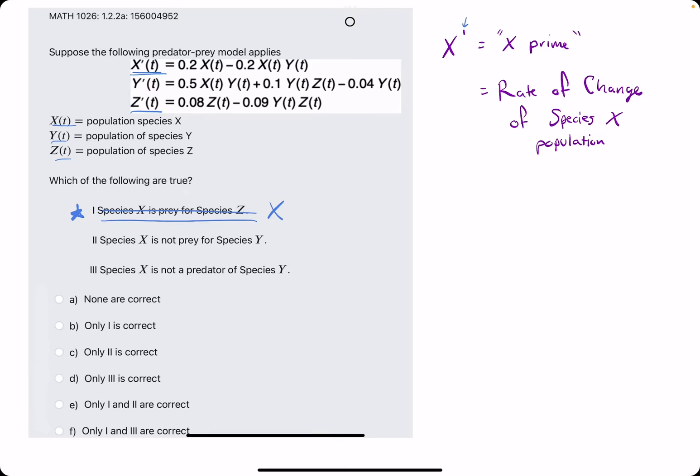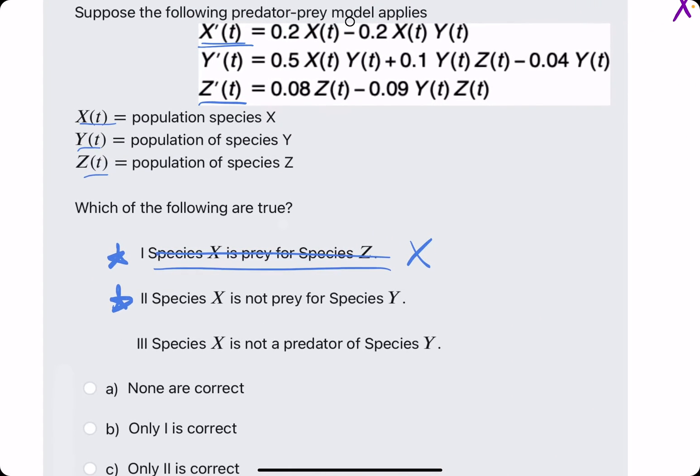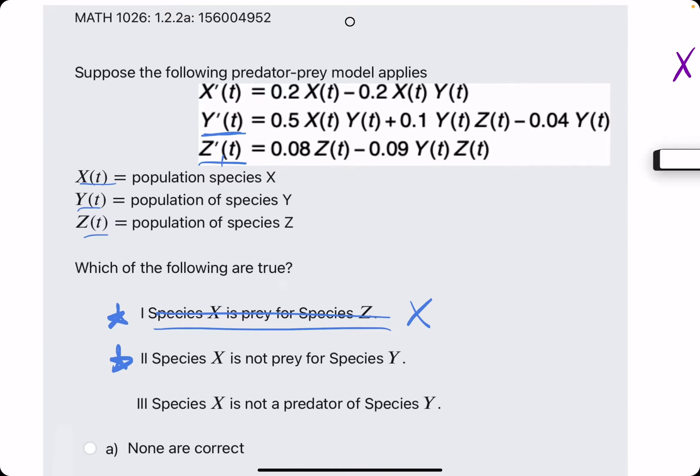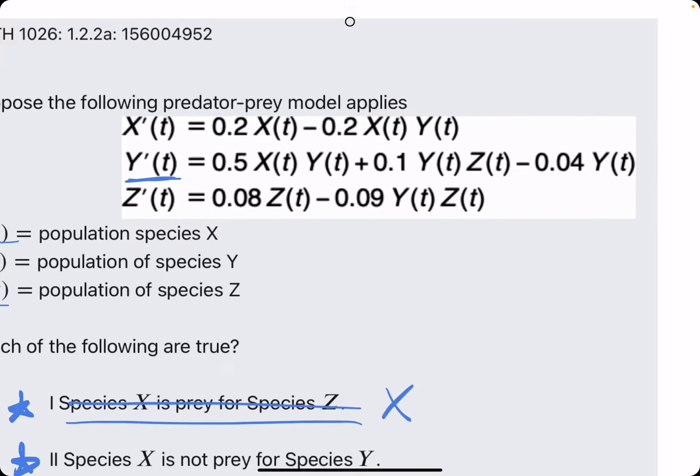Number two: species X is not prey for species Y. They're saying that Y is not the predator for species X. So one way we can check this is by looking at Y prime. Looking at Y prime, it looks like we see X with a positive coefficient in front of it. What does this mean?